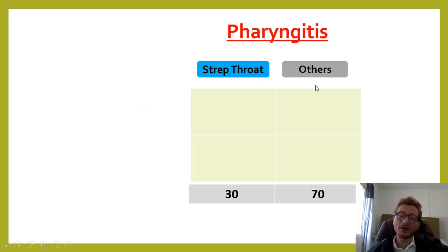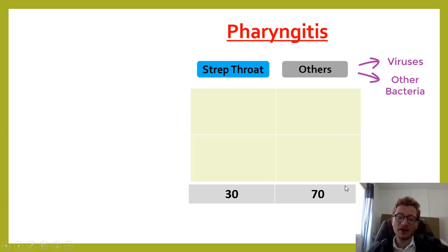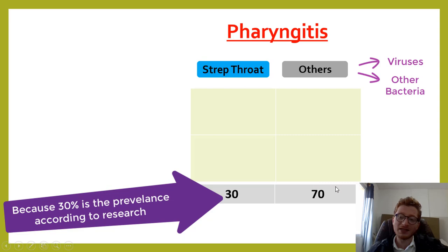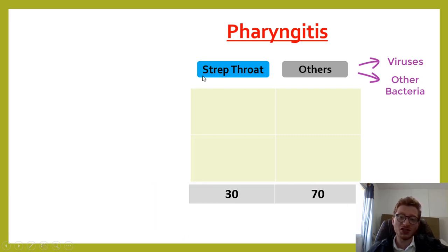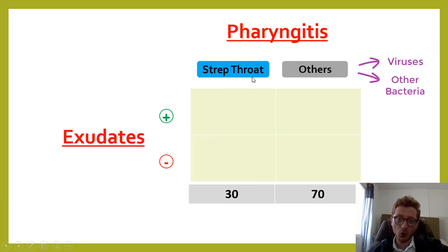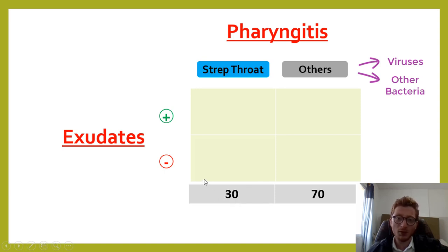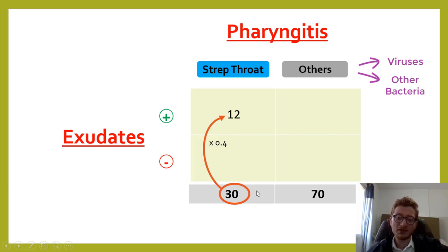Now let's do the calculations. Pharyngitis can either be strep throat or other organisms — viruses or other bacteria. Out of 100 cases of pharyngitis, 30 will be strep and 70 will be others, judged by the gold standard throat culture. If we have 30 people with strep throat, how many will have exudates? We use sensitivity: 0.4 times 30 equals 12. So 12 will have exudates and 18 will not.